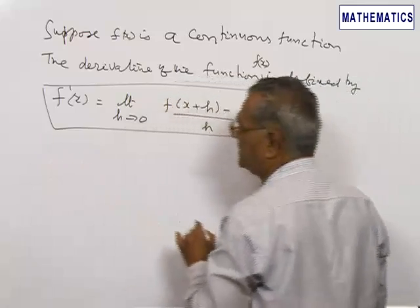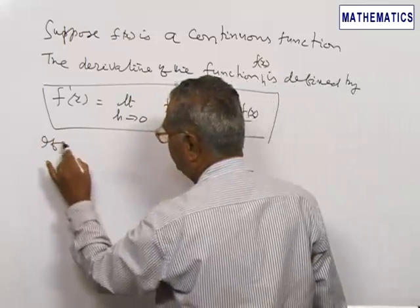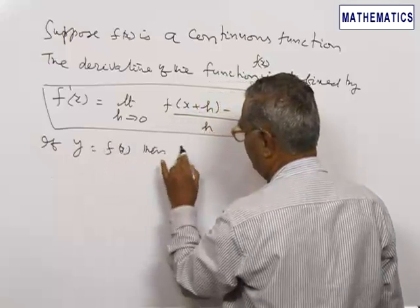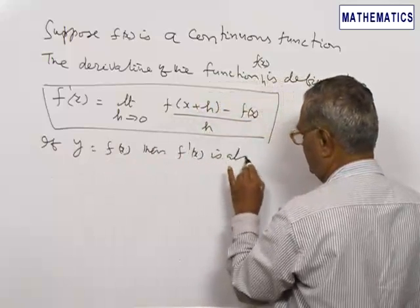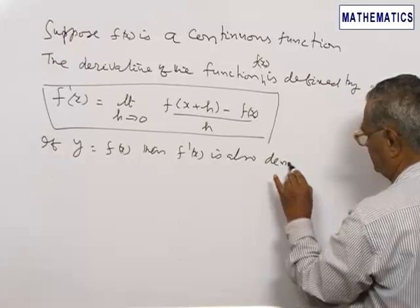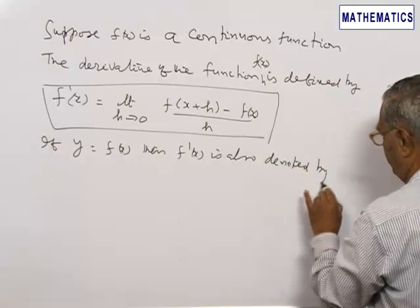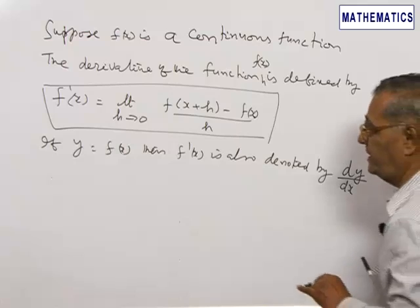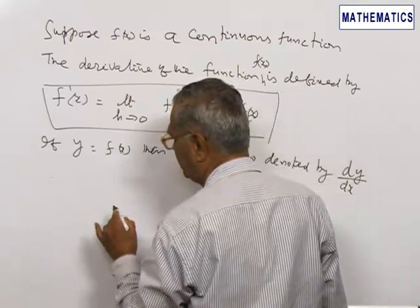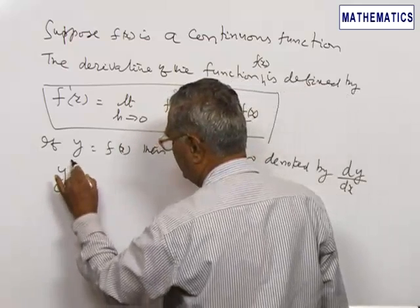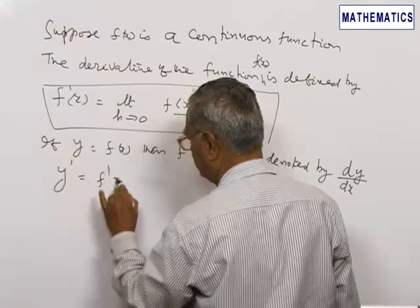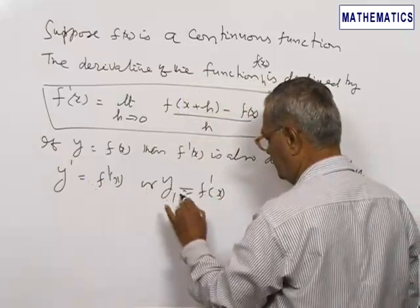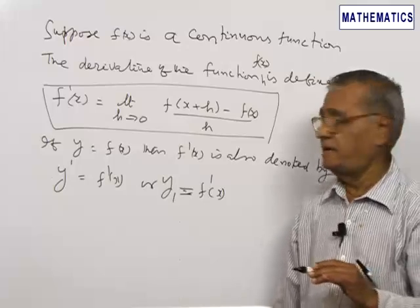The derivative is also called the differential coefficient. If we denote y equal to f of x, then f dash x is also denoted by dy by dx. Sometimes the notations for the derivative of a function are: y dash, which is the same as f dash x, or y₁ equals f dash x. These are all standard notations for the derivative of a function.